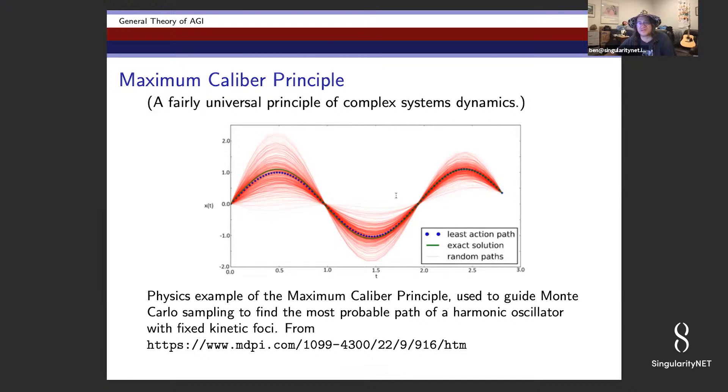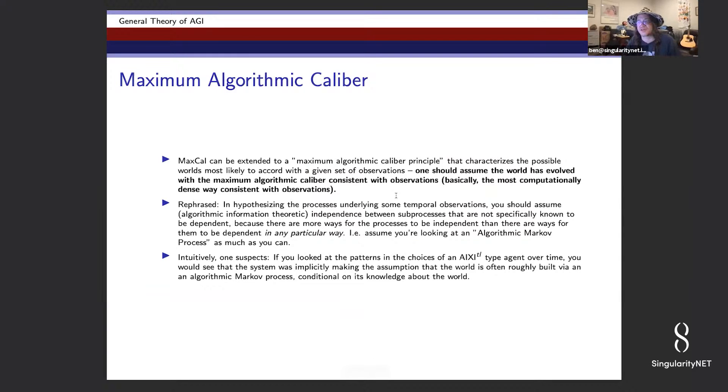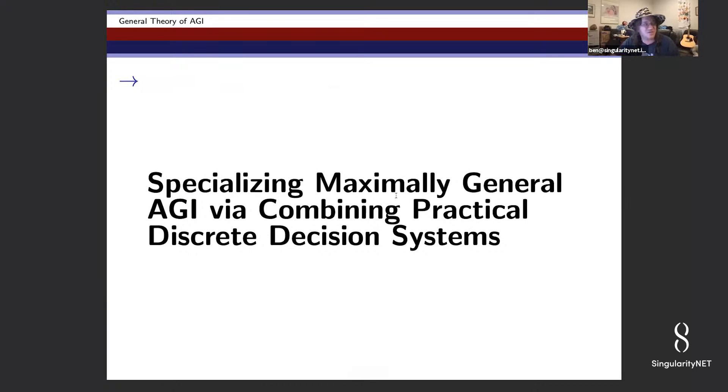You can go further in this direction. I think I'm not going to talk about it too much here, but it's in some papers you can find on my archive. You can try to ask how will these infinitely powerful or nearly infinitely powerful, but infeasible to implement AGI algorithms, how will they represent knowledge internally? And you can look at things like algorithmic Markov processes and properties like maximum algorithmic caliber that in a way tell you what sorts of thoughts and knowledge structures should be occurring inside these maximally intelligent systems. But yeah, I think that's enough for now.